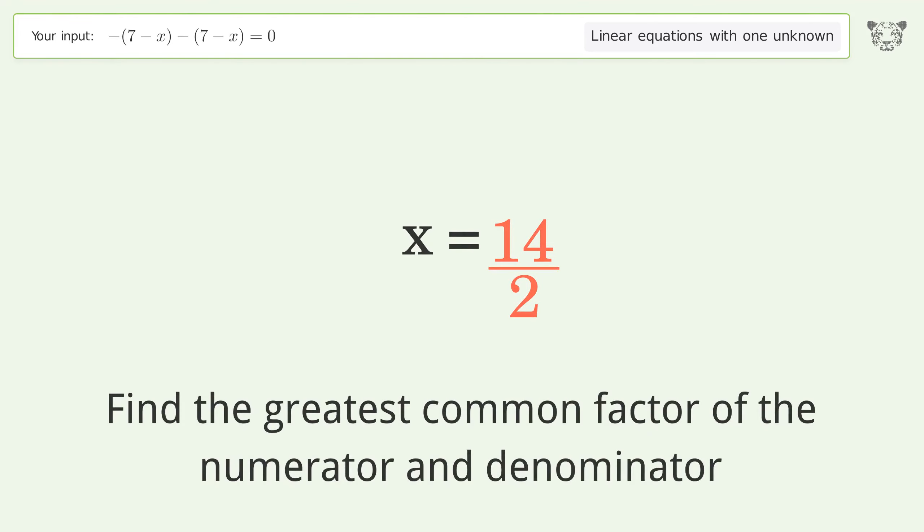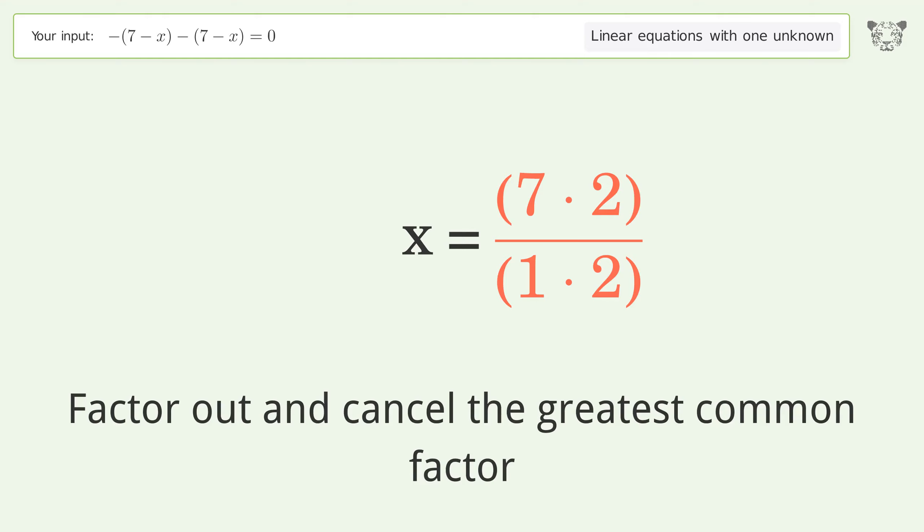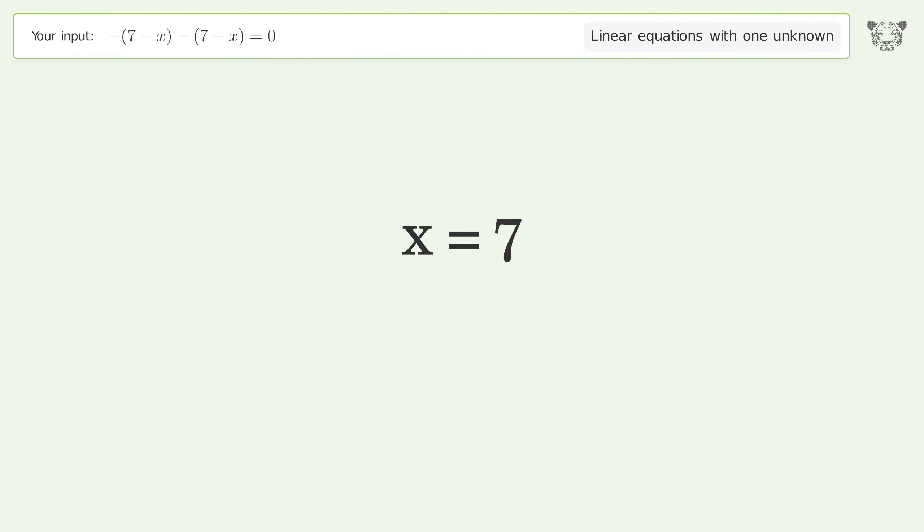Find the greatest common factor of the numerator and denominator. Factor out and cancel the greatest common factor. The final result is x equals 7.